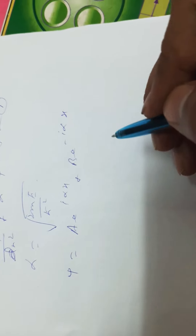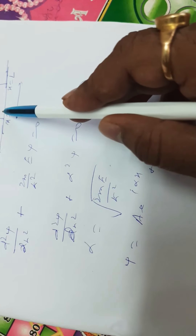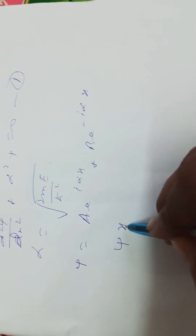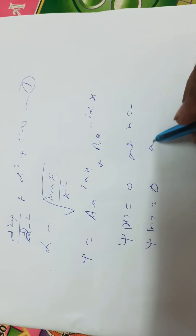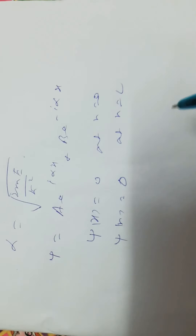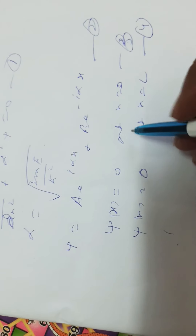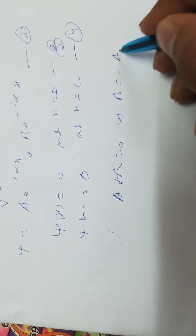Since the probability of finding the particle at x equal to 0 and x equal to l is 0, we apply boundary conditions: ψ(0) equal to 0 and ψ(l) equal to 0. Applying the first condition to the general solution, we get A plus B equal to 0, which implies B equal to minus A.